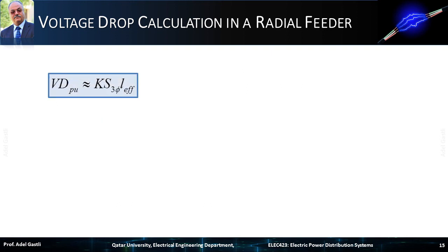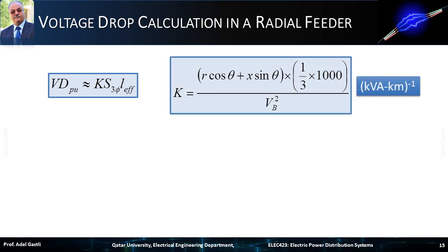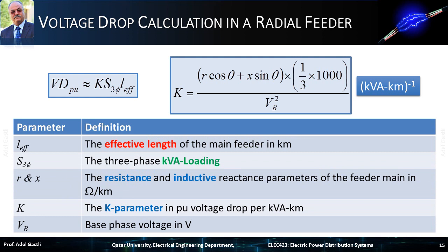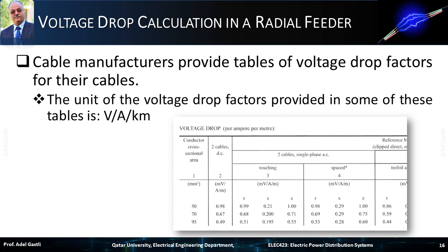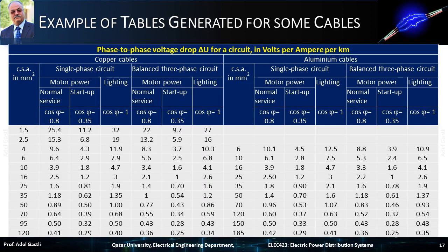To summarize, the simple equation commonly used to estimate the voltage drop in a feeder is this one, where the constant K is calculated with this equation. The different parameters and their respective units are given in this table. Cable manufacturers provide tables of voltage drop factors for their cables, and the unit of the voltage drop factors provided in some of these tables is volts per ampere per kilometer. This table is an example of such voltage drop data tables. We will come back to such tables in the next chapter and describe them further through typical examples and applications.